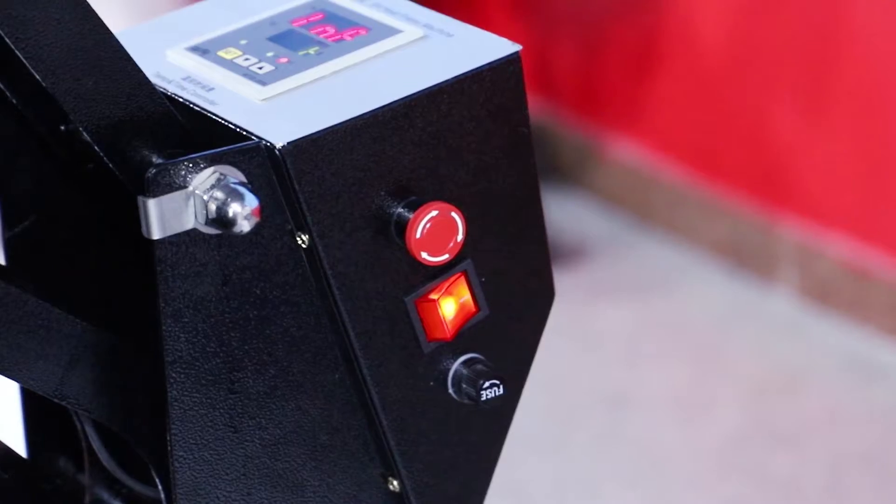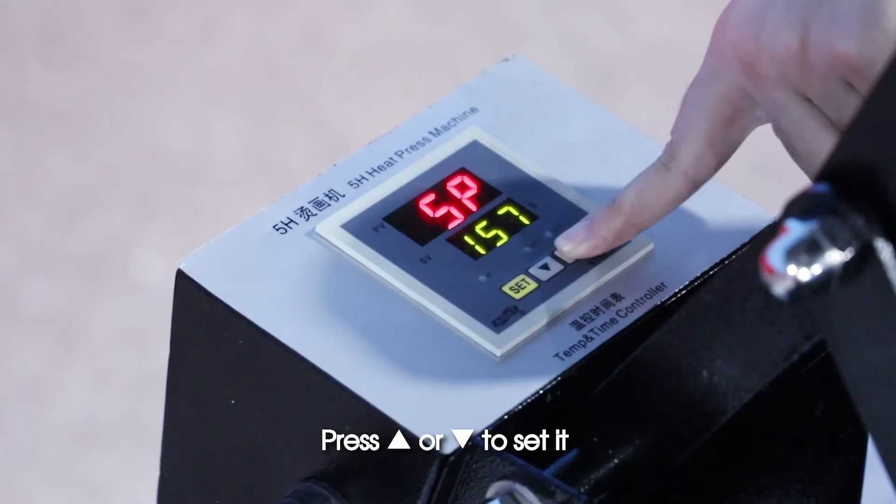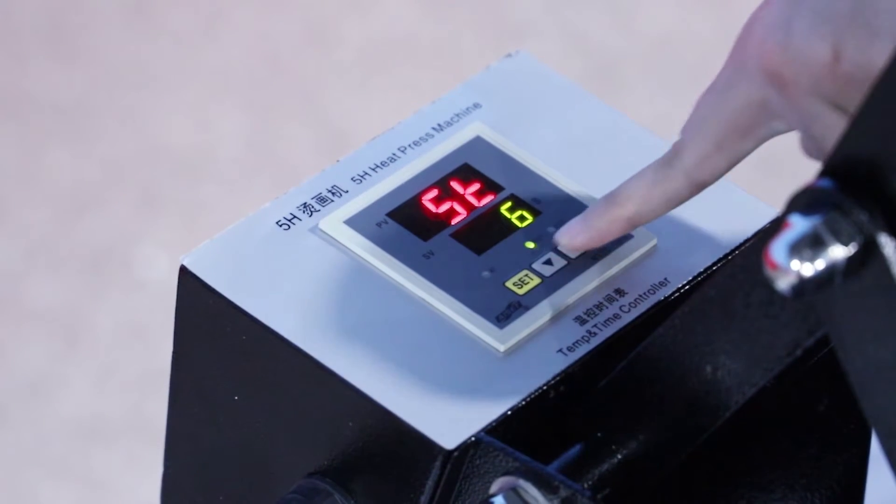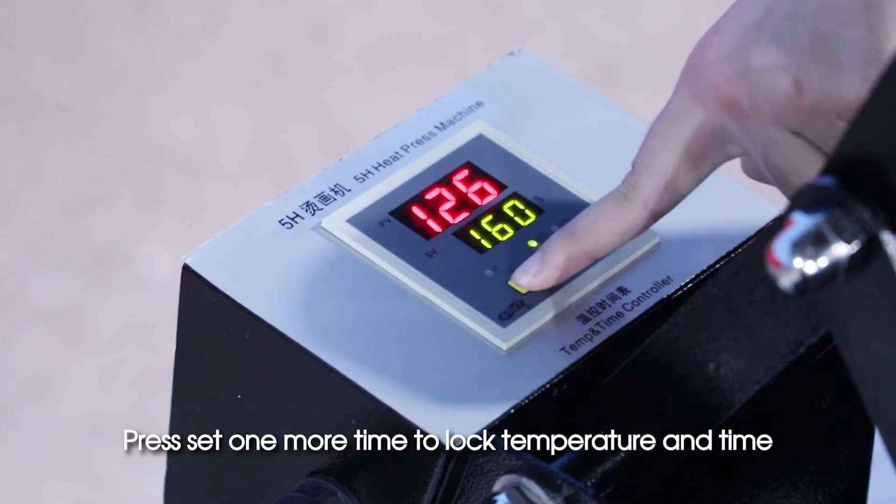Power on. Press SET to set temperature, then press up or down to adjust. Press SET again to set time, then press up or down to adjust. Press SET one more time to lock temperature and time.